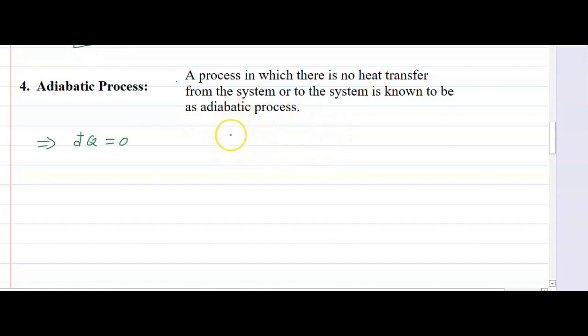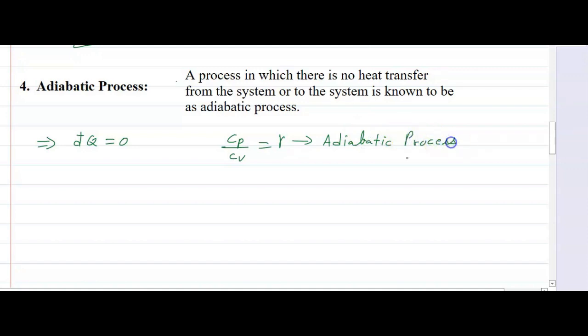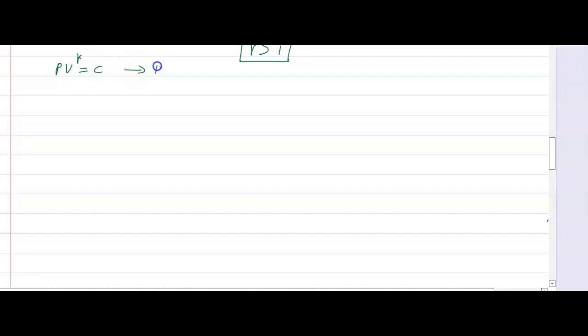We know that Cp divided by Cv equals gamma, and gamma is the adiabatic index. Gamma is always greater than 1, because Cp is always greater than Cv. For the adiabatic process, PV raised to the power gamma equals constant — this is our first equation.